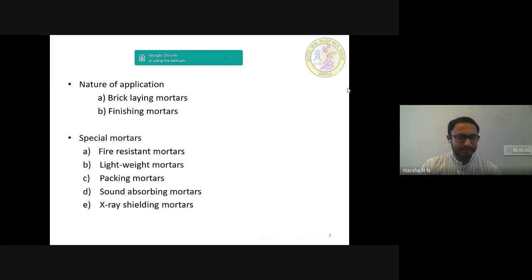Next type is special mortars. Following are the various types of special mortars which are used for certain conditions. First one, fire resistant mortars. This mortar is prepared by adding alumnus cement to the fine crust powder of fine bricks. The usual proportion is one part of alumnus cement to two parts of powder of fire bricks. This mortar is fire resistant and it is therefore used with fire bricks for lining furnaces, fireplaces, ovens, etc.